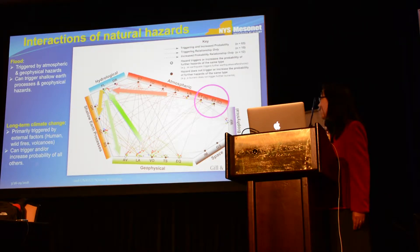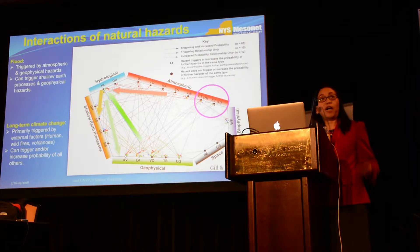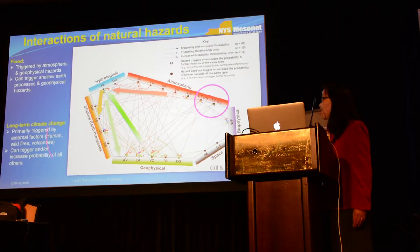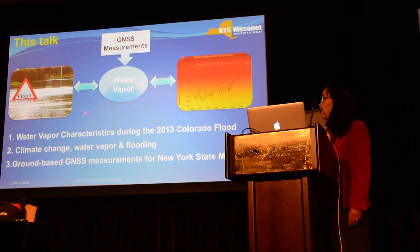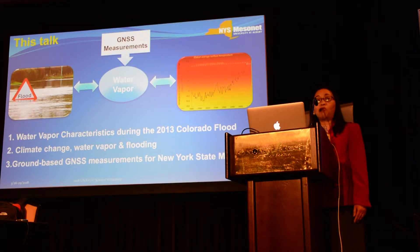If we look at long-term climate change, it is divided into extreme hot and cold temperature, which can trigger flooding. And it is primarily triggered by anthropogenic effects and other things like wildfires and volcanoes. In the meantime, it can trigger almost everything in this plot. So what I'm going to do in this talk is connect those four things: water vapor characteristics during the 2013 Colorado flood, prior and preliminary studies linking long-term climate change, water vapor, and flooding together.